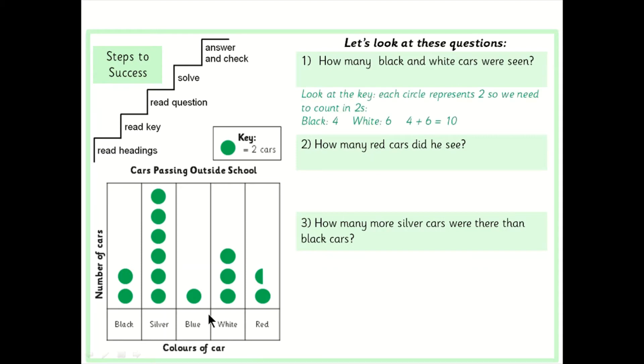So black two four got four black cars white two four six so if I've got four black six white add them together four and six equals ten.